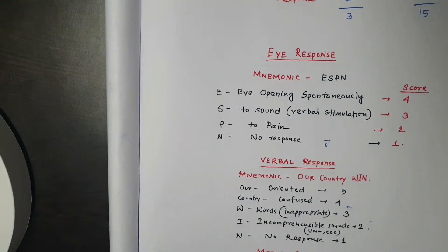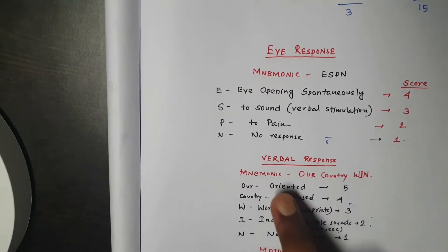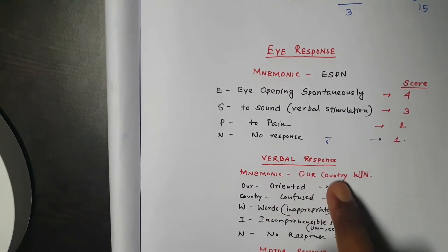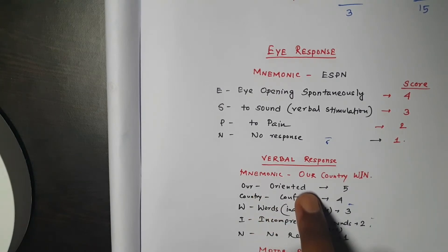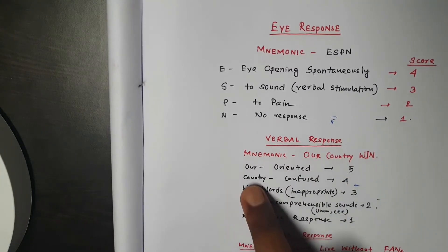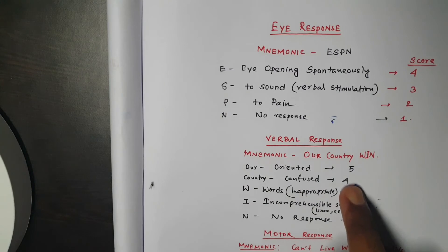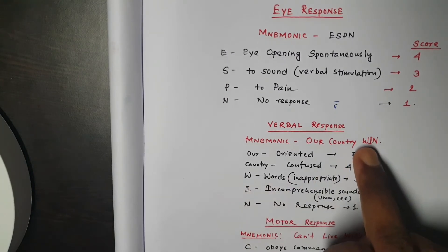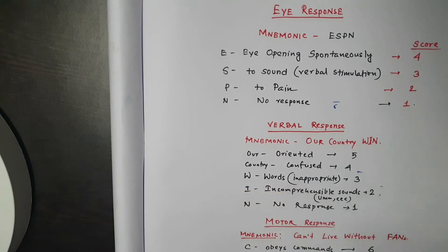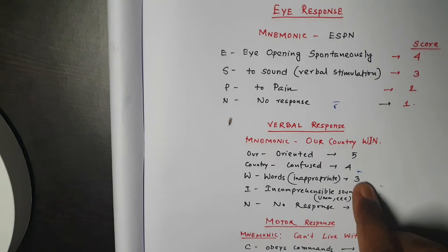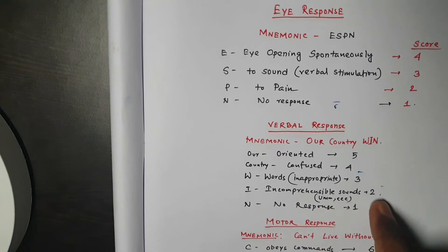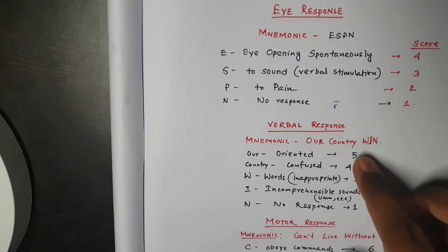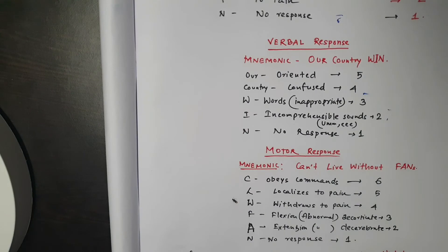The second component is Verbal response. The mnemonic is 'Our Country Win.' O stands for Oriented, maximum score 5. C for Confused, score 4. W for Words — inappropriate words, score 3. Then sounds like 'yeah,' score 2. No response is score 1. So verbal response goes 5, 4, 3, 2, 1.